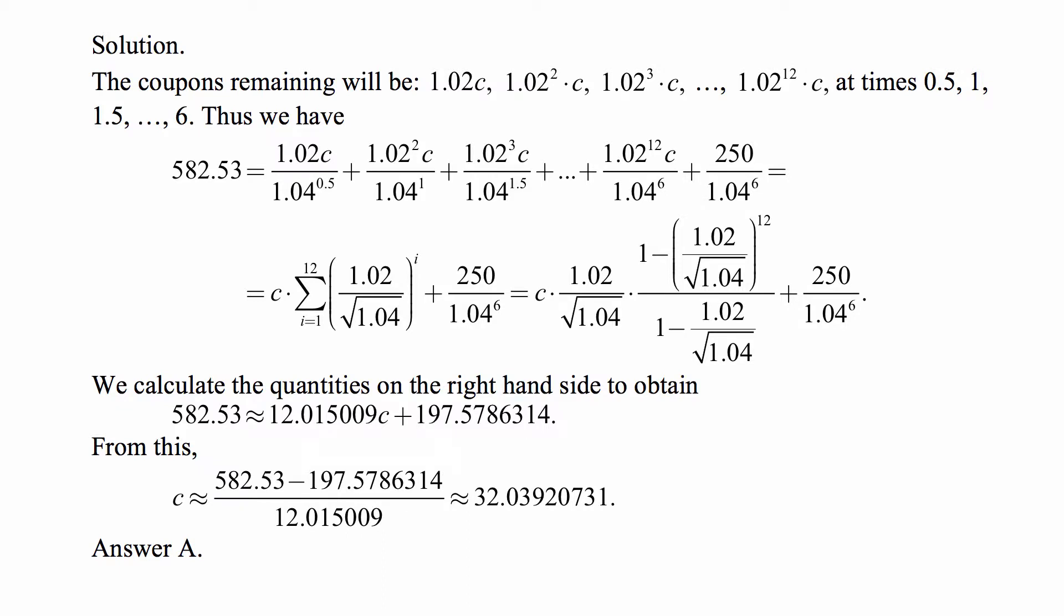Here is the solution. The coupons remaining will be 1.02c, 1.02²c, 1.02³c, and so on. The last one will be 1.02¹²c. They will come at times 0.5, 1, 1.5, and so on, until the last one comes at time 6 in the future.